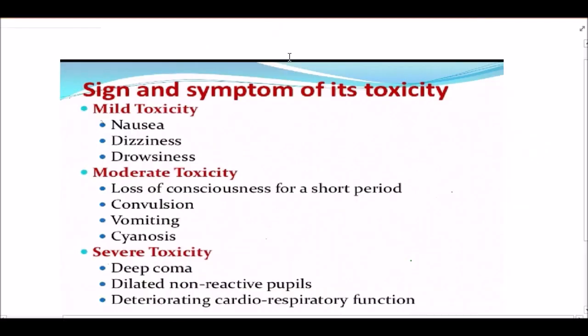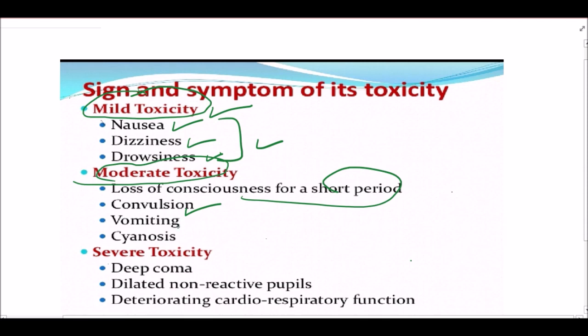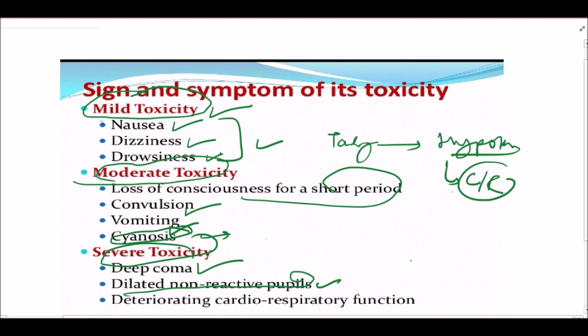There are various cyanide symptoms depending on the toxicity of cyanide. In case of mild toxicity, there is nausea, dizziness, drowsiness. In case of moderate toxicity, there is loss of consciousness for short period, seizures or convulsions, vomiting, and cyanosis. Initially there is tachycardia, tachypnea, then followed by hypotension and depression of cardiorespiratory activities. In case of severe toxicity, there is deep coma, dilated non-reactive pupils, deterioration of cardiorespiratory function, and finally death due to respiratory failure.